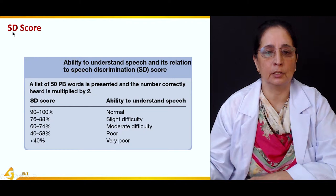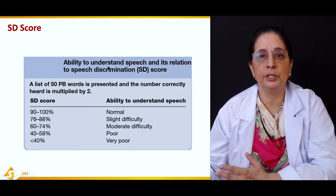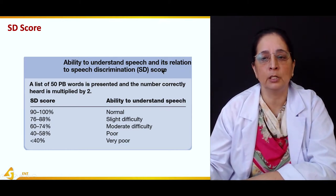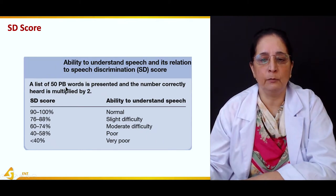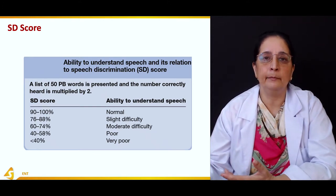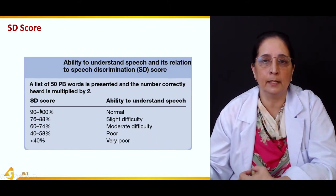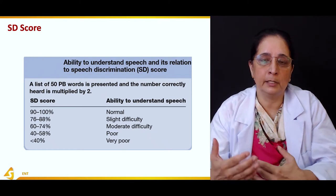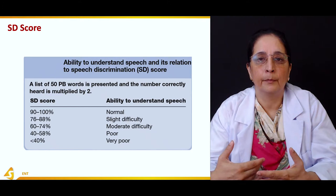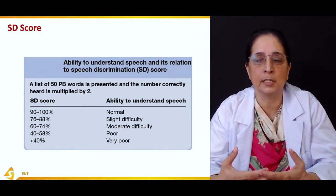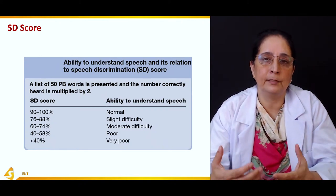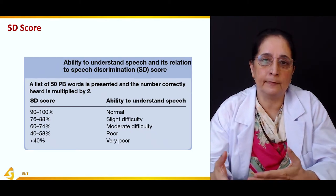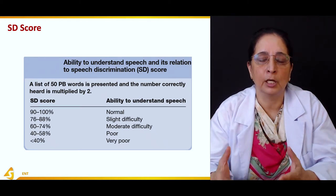Speech discrimination score is the ability to understand speech. A list of 50 phonetically balanced (PB) words is presented to the patient. The number of words correctly identified is multiplied by 2 to give the speech discrimination score. For example, if the patient correctly identifies 30 out of 50 words, then 30 × 2 = 60, giving a score of 60.